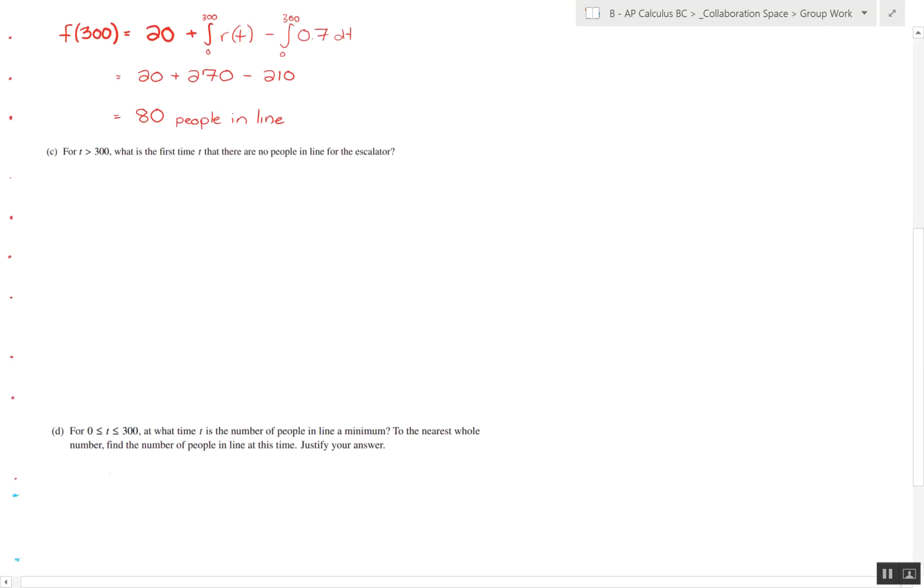Part C asks us when is the first time that there are no people in line for the escalator when t is greater than 300. We basically want to find when it's equal to zero. We know that at time t equals 300 there's 80 people in line, as the amount of people in line is decreasing at a rate of 0.7 people per minute.